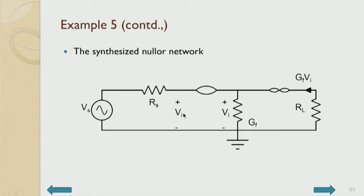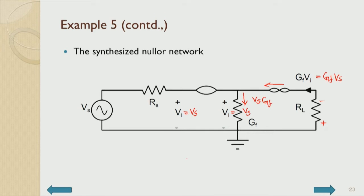The input is voltage-controlled, so the nullator comes in series; it is a current source at the output, so the norator comes in shunt. The voltage VI equals VS since no current is drawn. The current through the conductance is VS×GF, and this flows through the norator. The norator develops any voltage demanded by the load while this current flows. Output current is GF×VS, confirming it is a trans-conductor.